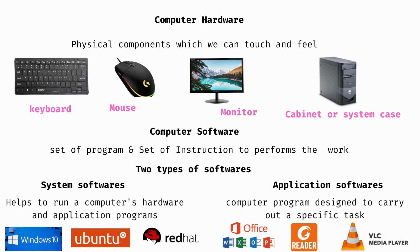Computer software. Software is a set of programs and a set of instructions. We cannot touch software. We can divide software into system software and application software.